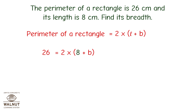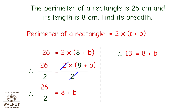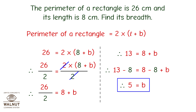Here we can use the division property, so we divide both the sides by 2. And we get 26 divided by 2 is equal to 8 plus b, that is 13 is equal to 8 plus b. Here we can use subtraction property. We subtract 8 from both the sides and we get b is equal to 5. That is the breadth of the rectangle is 5 centimeters.